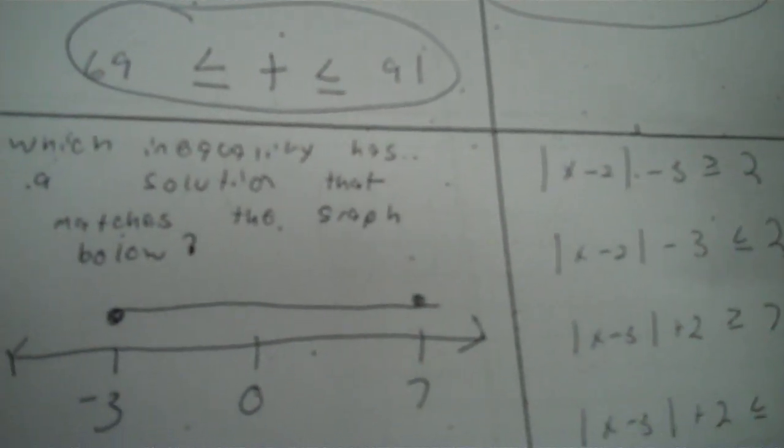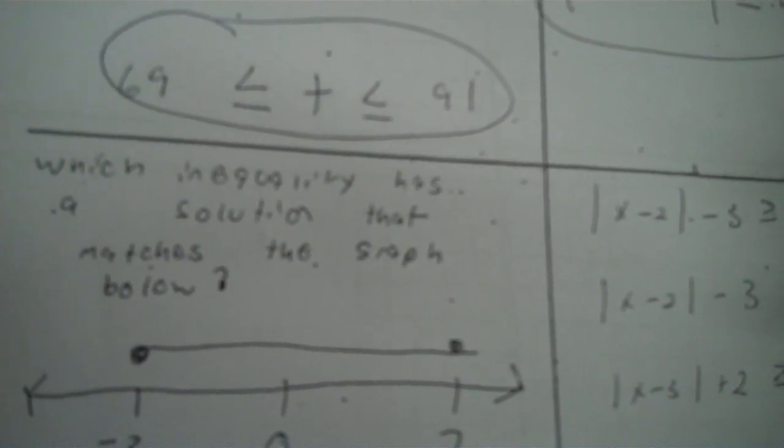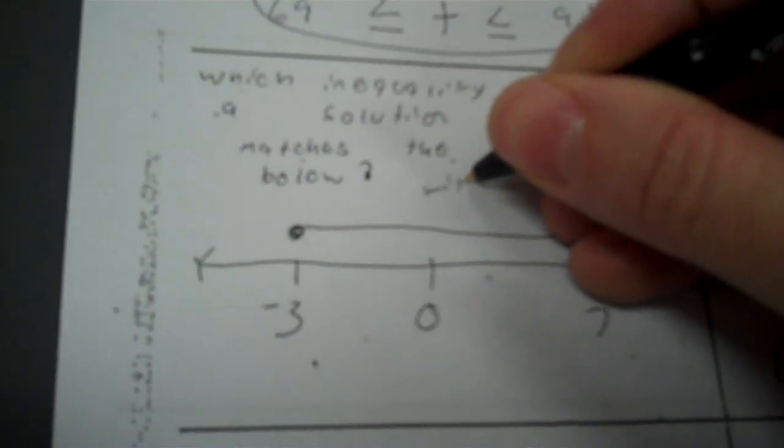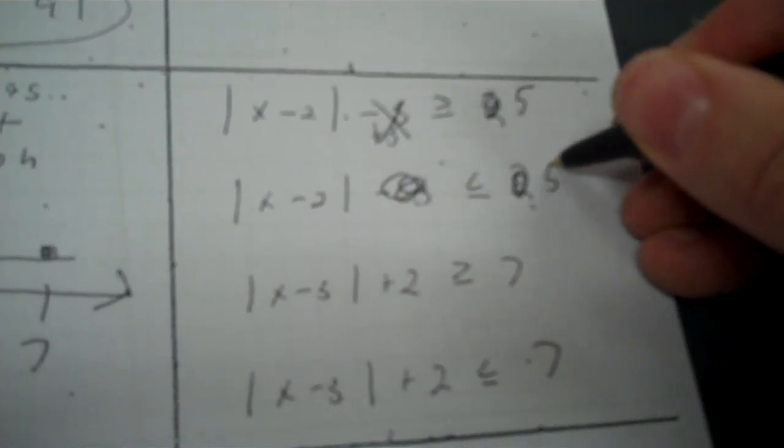Which inequality, and I made some multiple choices here, which inequality has a solution that matches the graph? It's between negative 3 and 7. It's within that range. I said within. Now, let's get rid of these minus 3s and plus 2s. If I add 3 here and add 3 to 2, that's going to be 5. So let's make that a 5. That's going to be the same thing. That's going to become a 5. That's going to be a 5. And then minus 2, minus 2 would give me 5.